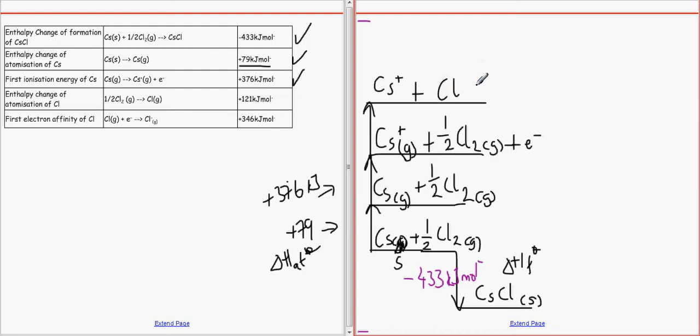So let's atomise Cl2, or half of it, to make Cs plus plus Cl plus e minus. Again, state symbols. And that would be plus 121 kilojoules per mole.